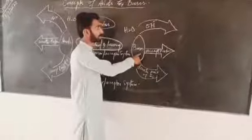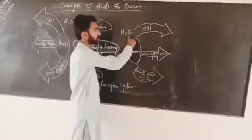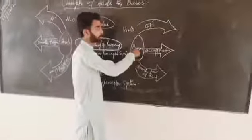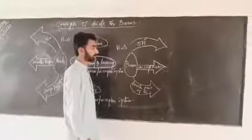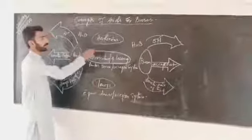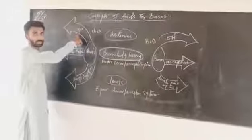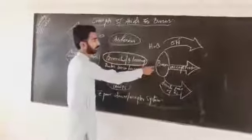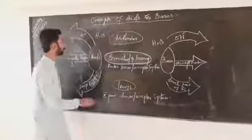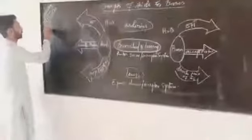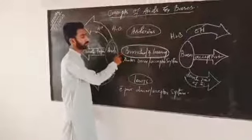Bases are those substances that give hydroxide ions in aqueous solution — or produce hydroxide ions in aqueous solution — and are known as bases. According to Arrhenius, those substances that give hydrogen ions are acids and those substances that give hydroxide ions are known as bases. For example, HCl when it gets dissolved in aqueous solution.